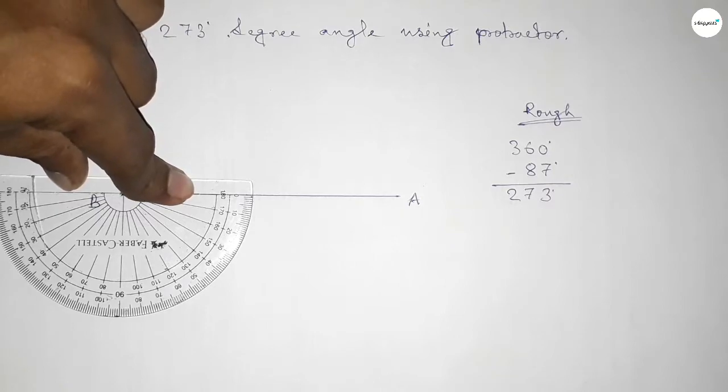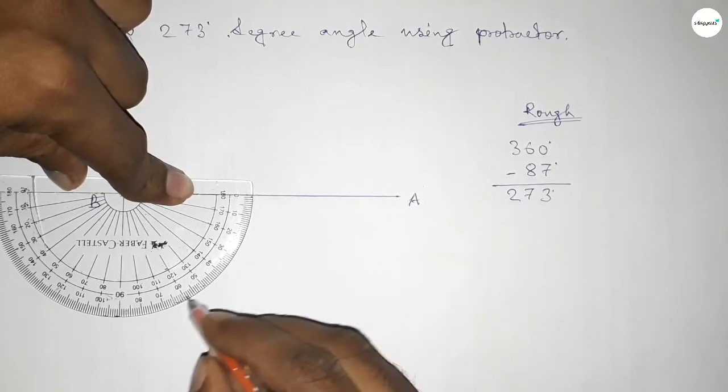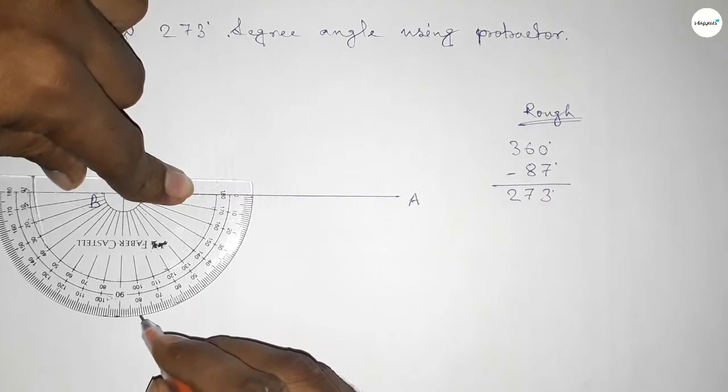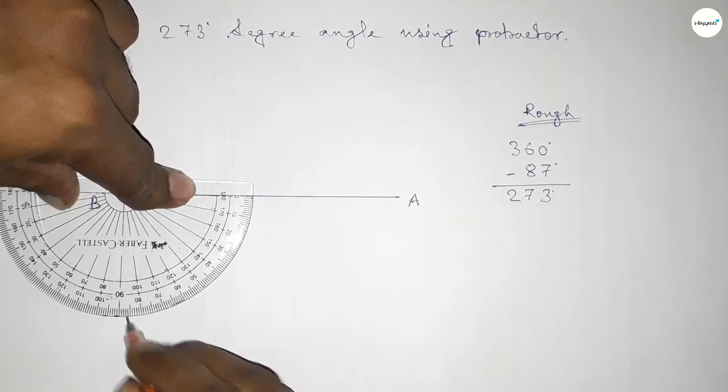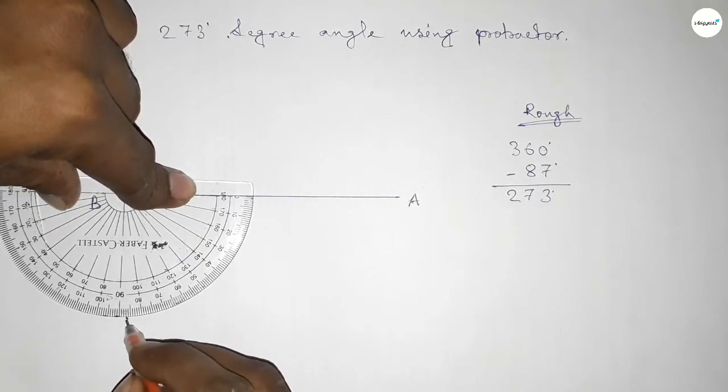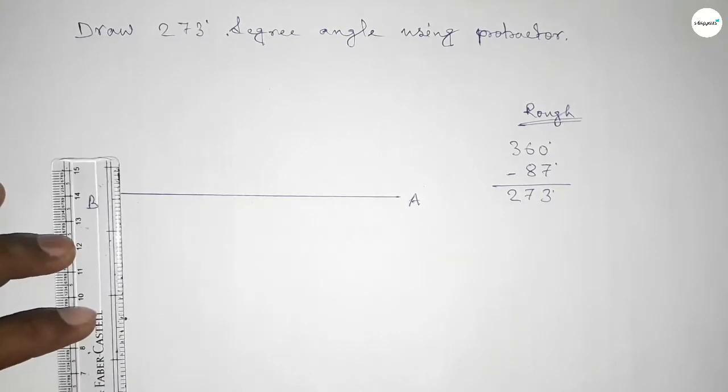Now counting 87 degrees. So this is 0, 10, 20, 30, 40, 50, 60, 70, 80, 85, 86, 87. So this is 87 degree angle. So now joining this side and taking here point C.